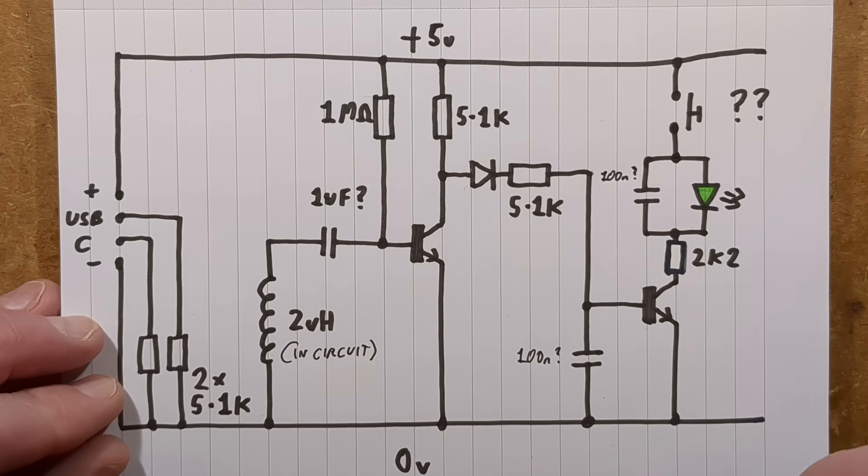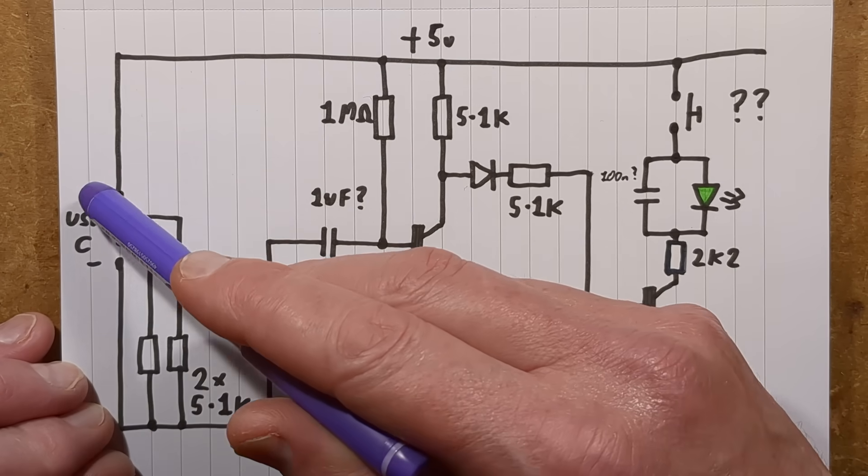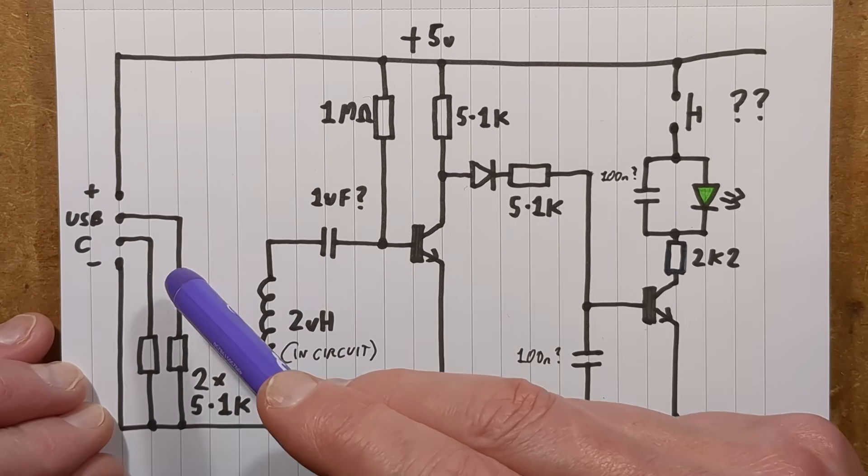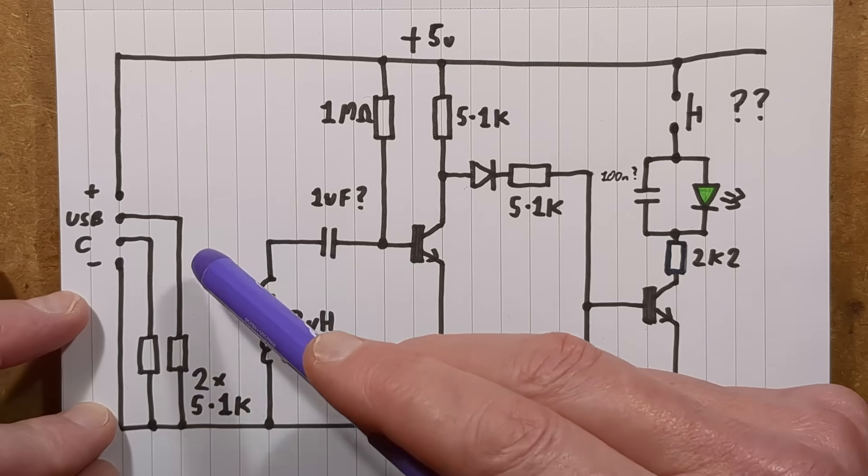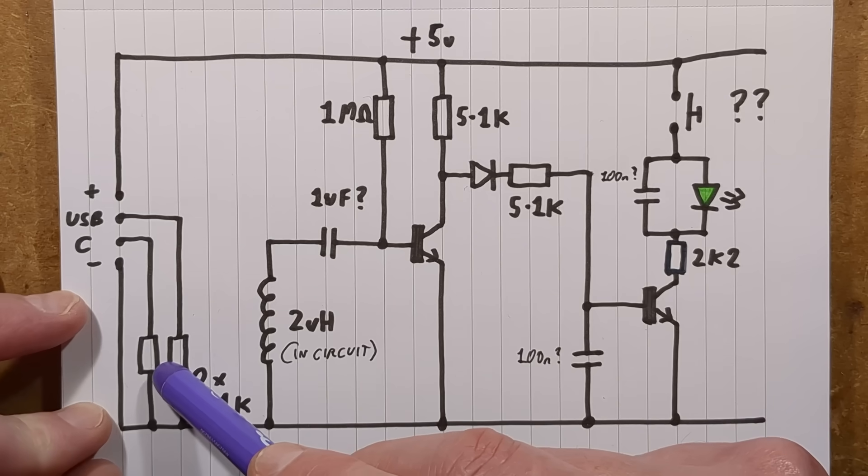And here is the schematic. So there's the USB-C port. It's got the positive and negative. It's also got the two CC pins connected that actually enable the output because it senses these resistors and detects there is a load connected.